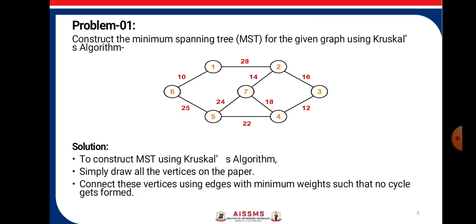Now, consider one problem given here and we have to find out the Minimum Spanning Tree for the given graph using the Kruskal's algorithm. Firstly, we will draw all the vertices on the paper. Then, we will start connecting the vertices using the edges which are having the minimum weights such that no cycle gets formed.